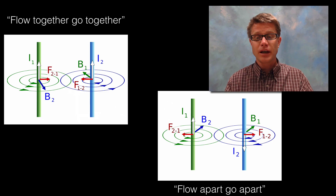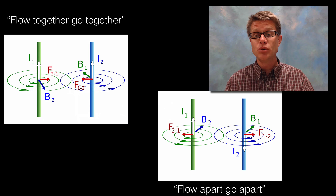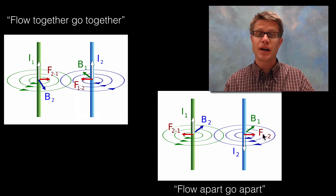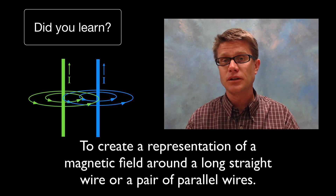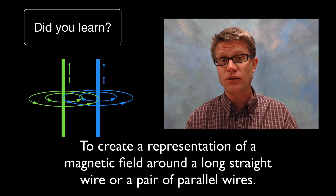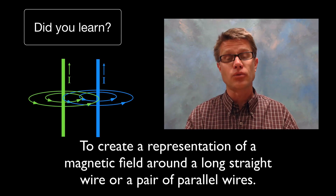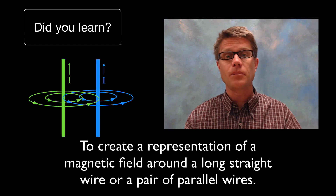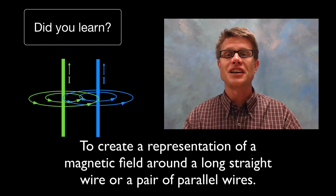If the current flows together, the wires go together — they attract. Likewise, if the currents go in opposite directions, the wires are pushed apart because the forces move away from the center. So did you learn to create a representation of a magnetic field around a wire or set of wires? Always use your right-hand rule. The more current we have, the greater the field, and the larger the radius, the smaller the magnetic field. I hope that makes sense and was helpful.